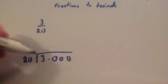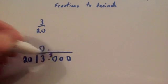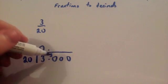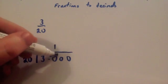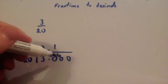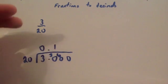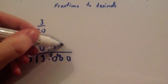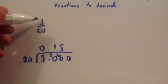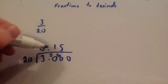So, 20 into 3 doesn't go. Remainder 3. 20 into 30 goes once. Remainder 10. 20 into 100 goes 5 times. 20, 40, 60, 80, 100. So, it goes 5 times. So, 3 twentieths is equal to 0.15.